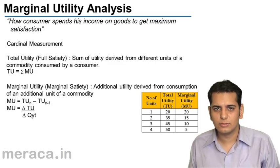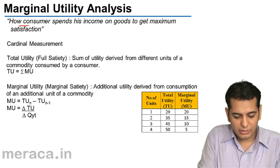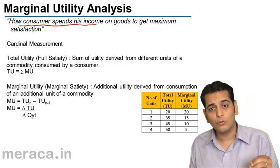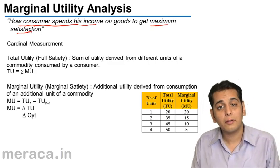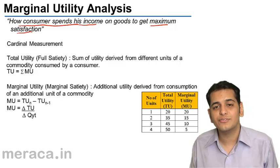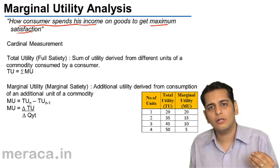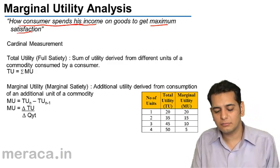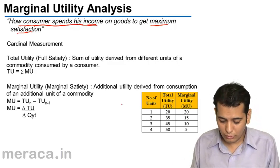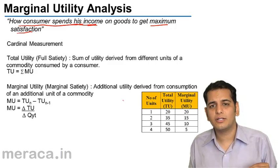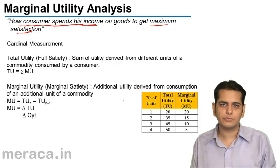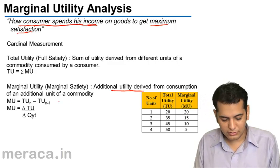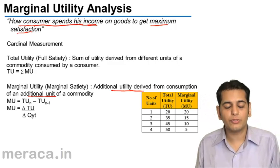Marginal Utility Analysis. We are studying how a consumer spends his income on goods to get maximum utility or maximum satisfaction. A consumer tries to maximize his utility level within the reach of his income. To understand this better, we need to understand what marginal utility is. Marginal utility is the additional utility derived from consumption of an additional unit of a commodity.